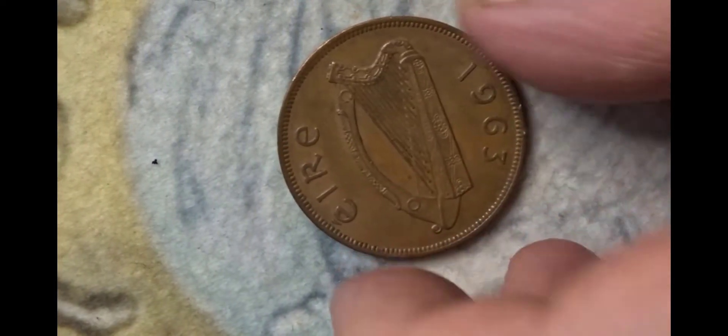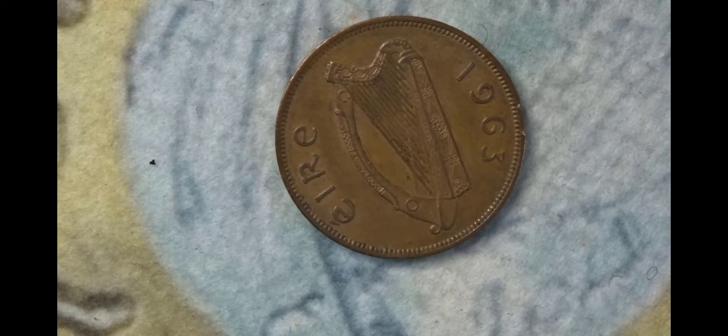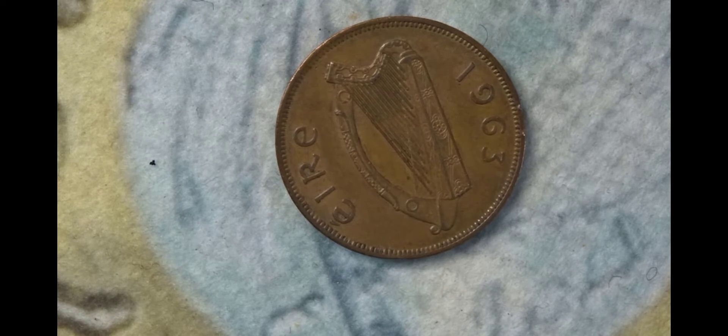Next one is slightly easier. This is from Ireland, it's the harp showing it's Ireland. You have the country name Éire, you also have the year which is 1963.